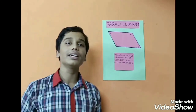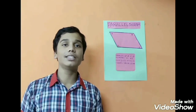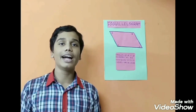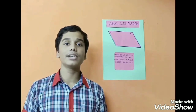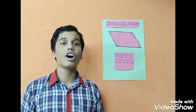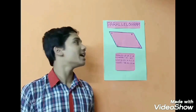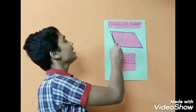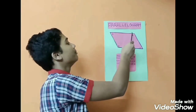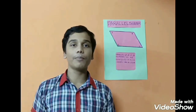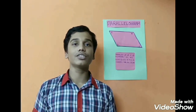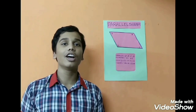In a parallelogram, opposite sides are parallel and equal to each other. The opposite sides are DC and AB, and BC and AD. They are facing opposite to each other, so they are known as opposite sides.